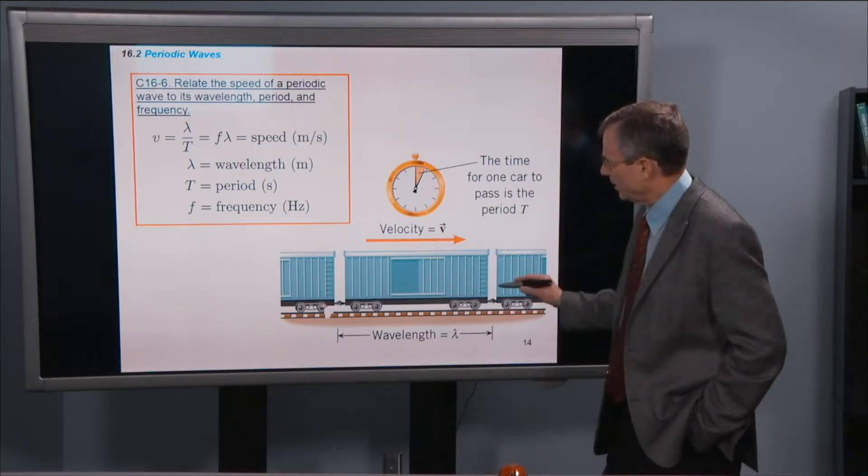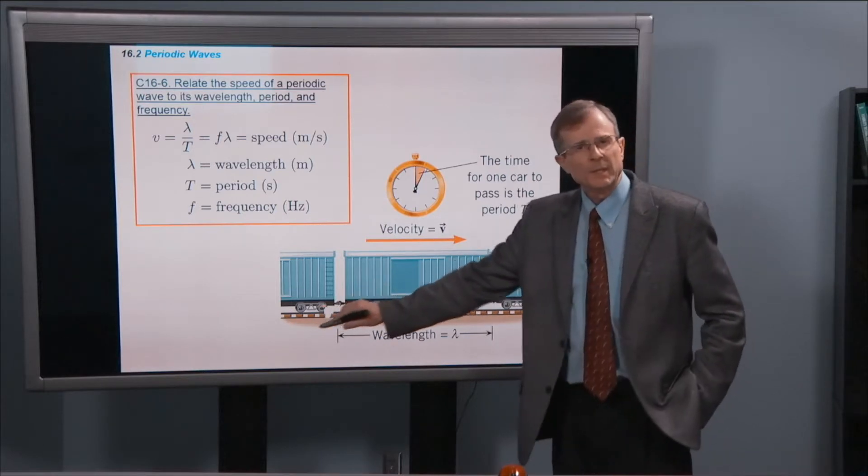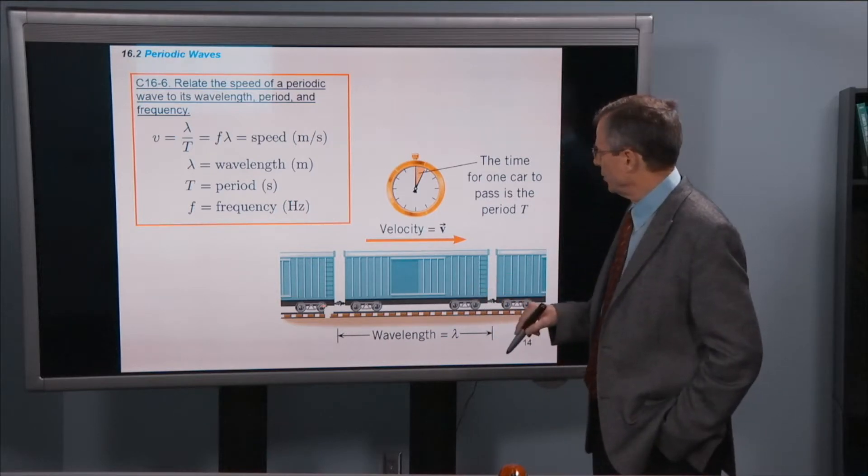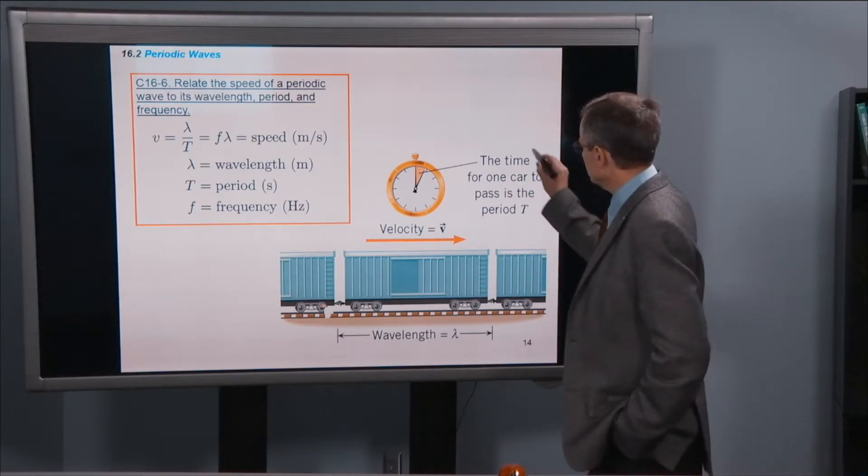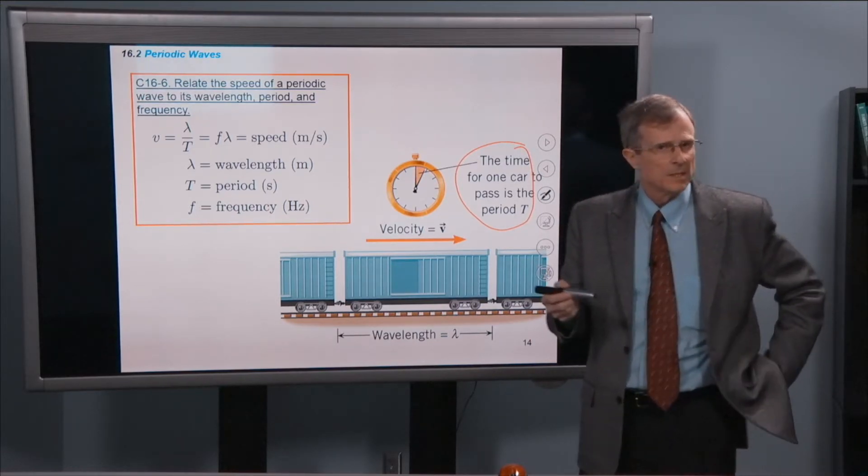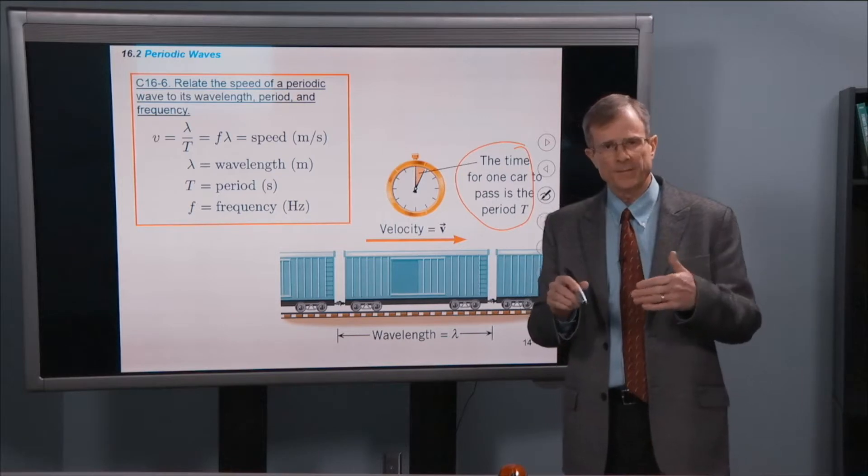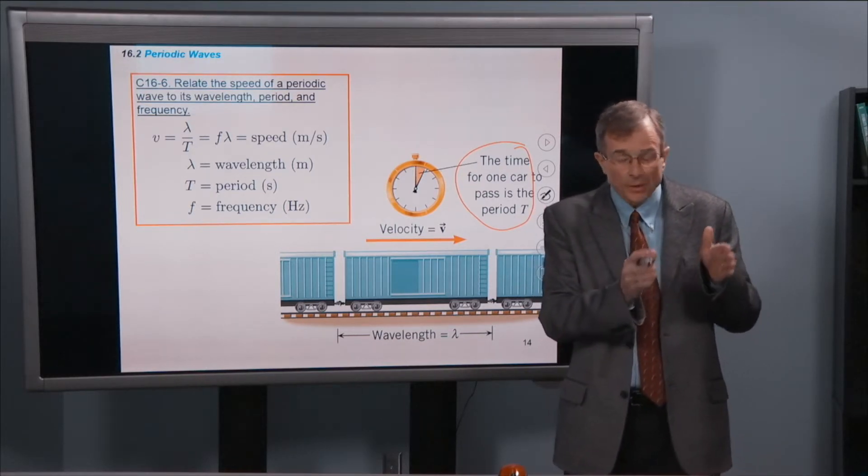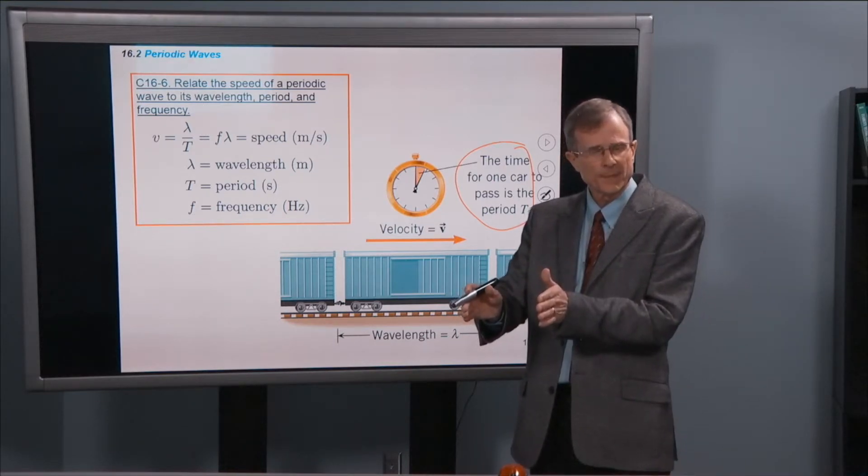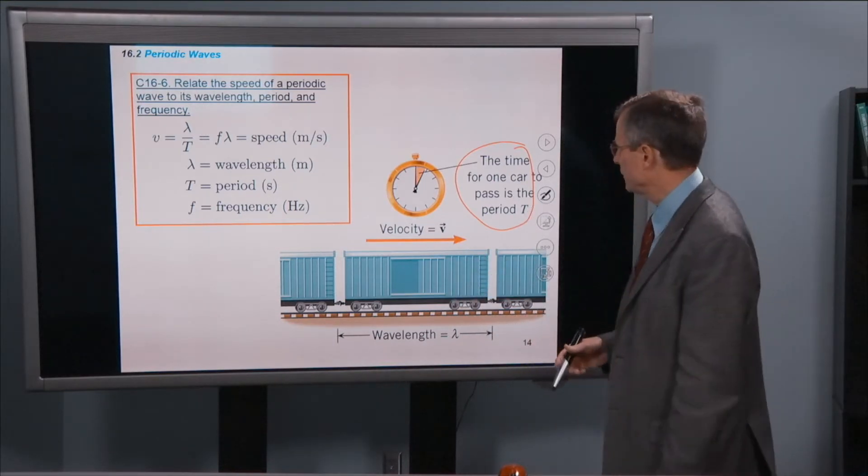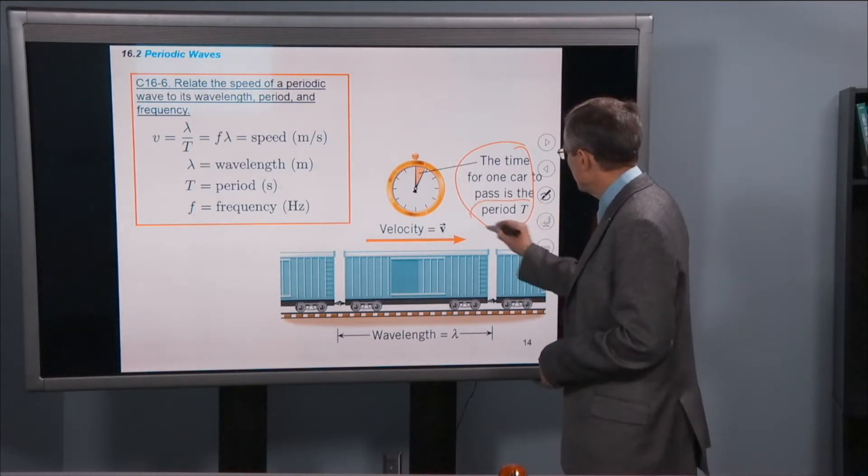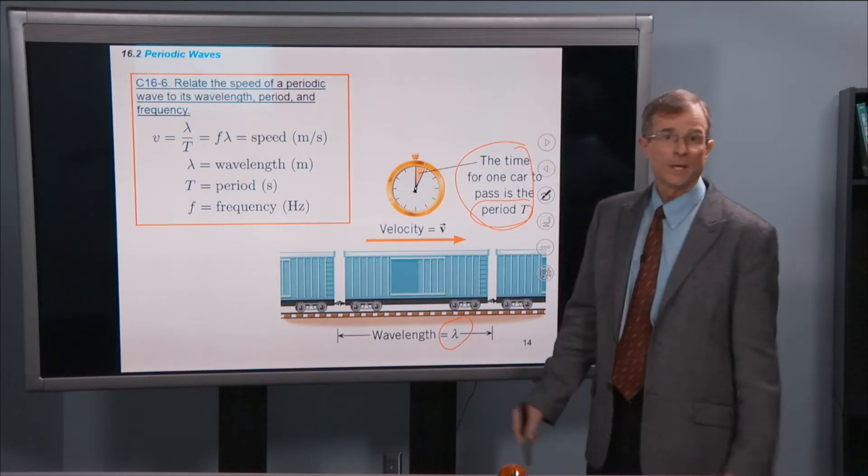If we have a train here, and we're thinking about each car of the train being one wavelength of the wave. And we also know the period, which is the time required for one car to pass. Same thing happens in a wave. The period is the time for one complete cycle. That's the time required for one wavelength of the pattern to pass by you.